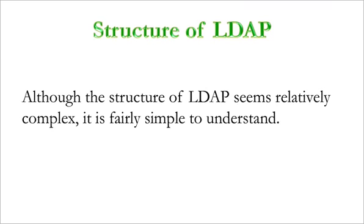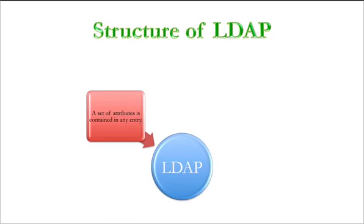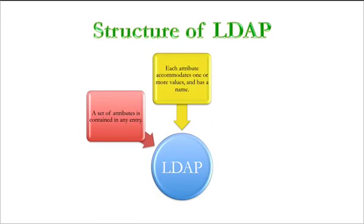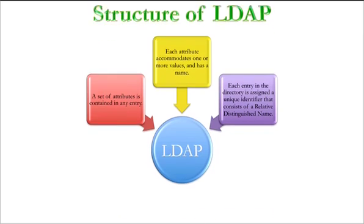Although the structure of LDAP seems relatively complex, it's fairly simple to understand. The basic structure is as follows: a set of attributes is contained in any entry. Each attribute accommodates one or more values and has a name. Each entry in the directory is assigned a unique identifier that consists of a relative distinguished name.